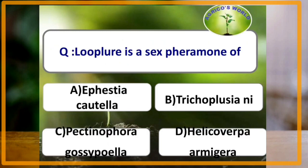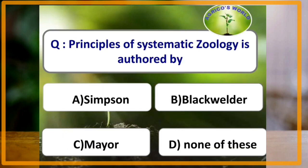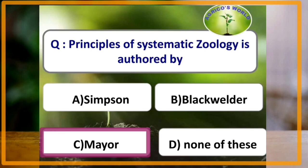Looplure is the sex pheromone of which of the following? The answer is Trichoplusia ni. Principles of Systematic Zoology is authored by which of the following? The answer is Mayr.